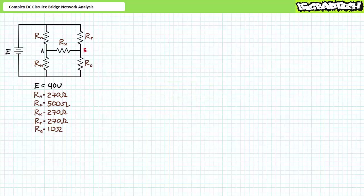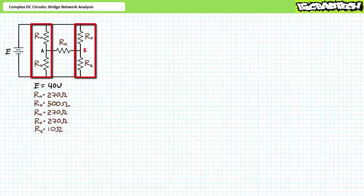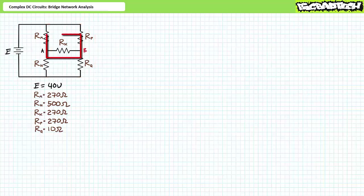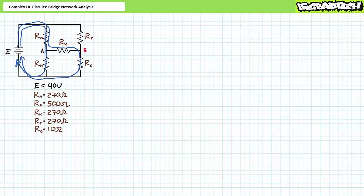A complex circuit is an arrangement of elements that features occasions in which elements are neither purely in series nor purely in parallel with one another. The classic example of a complex circuit is a bridge network consisting of five elements, where two pairs of stacked elements form the uprights of the bridge — Rm and Rn on the left and Rp and Rq on the right — and the fifth element, Rx, is the decking of the bridge spanning the chasm in between.